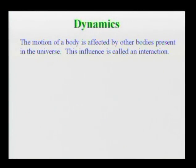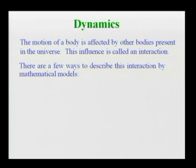When a body interacts with other bodies in the universe, it results in the particular motion of that body. That influence of the body with the rest of the universe is referred to as an interaction. There are various ways of describing interaction, because interaction is a phenomenon, and we introduce several physical quantities to describe that interaction.